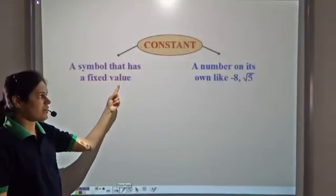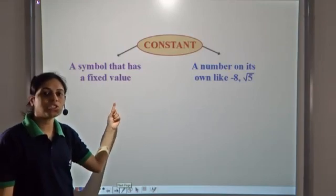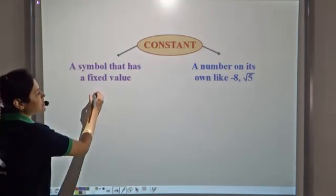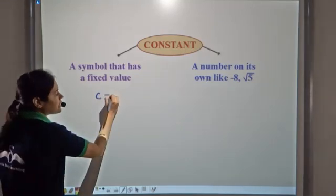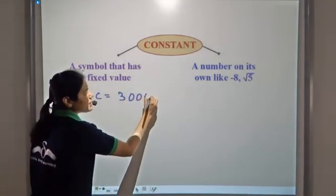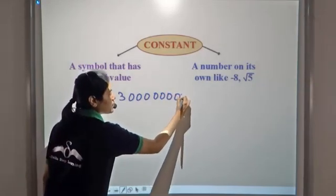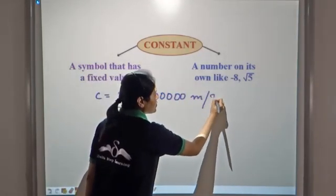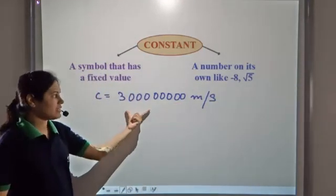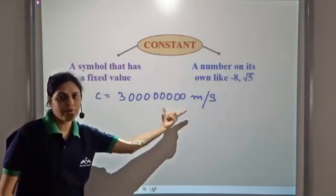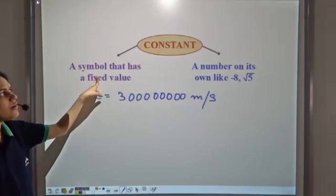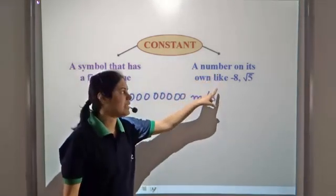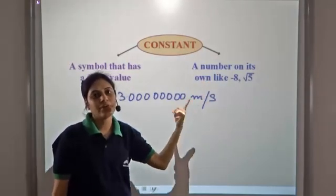What is a constant? A constant is a symbol that has a fixed value. Constants can also be represented by symbols — for example, the speed of light is represented by the symbol c, but it has a fixed value of three followed by eight zeros meters per second. Instead of writing such a huge number we represent it by c, but it is a constant. Any number is also a constant.